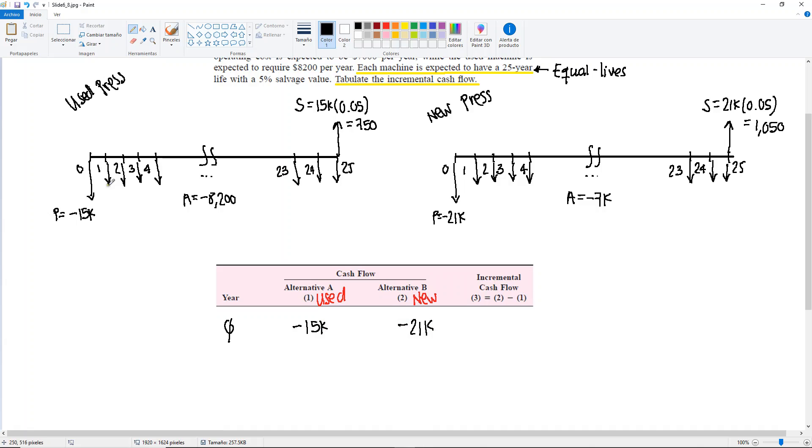Now we mentioned that years 1, 2, 3, all the way up to year 25, you have an A. There's no point here of writing year by year, 1 through 25, with the same amount. This is the shortcut I'm talking about. So we're going to write down years 1 through 25. For the used press, the cash flow is going to be minus $8,200.